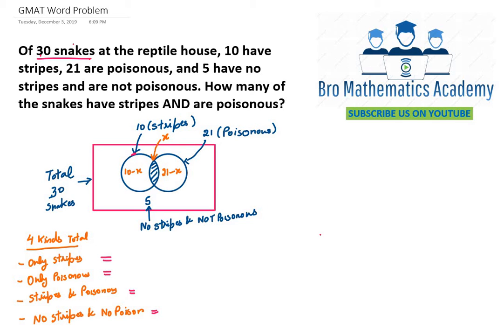Hello friends, hope all of you are doing good. Let's look at this next GMAT word problem. Of 30 snakes at the reptile house, 10 have stripes, 21 are poisonous, and 5 have no stripes and are not poisonous. How many of the snakes have stripes and are poisonous?